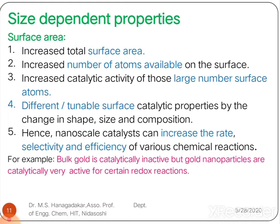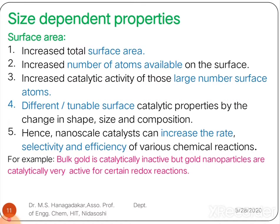Size-dependent properties of nanometals can be elaborated with specific points. First: increase in total surface area. Second: increase in the number of atoms available for reaction on the surface. Third: increase in catalytic activities of large numbers of surface atoms. Fourth: different and tunable surface catalytic properties by change in size and composition. Fifth: at nanoscale, catalysts can increase the rate, selectivity, and efficiency of various chemical reactions.